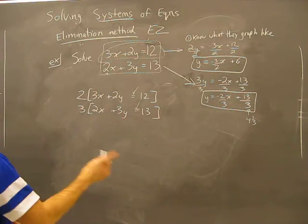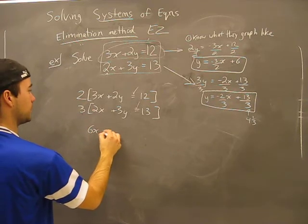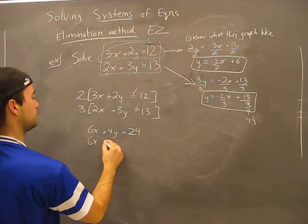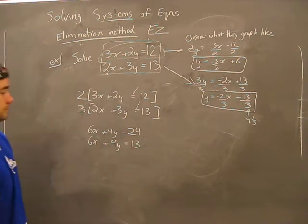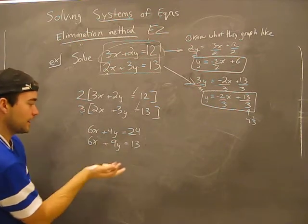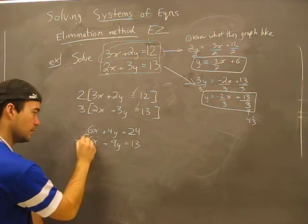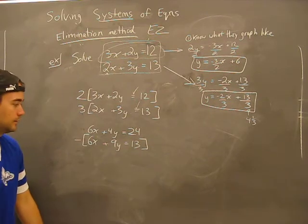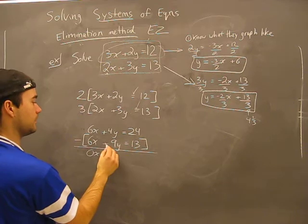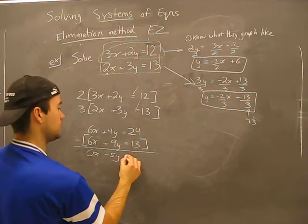All right, let's figure this out. The top row gives us six X plus four Y equals 24. The second row gives us six X plus nine Y equals 39. Now we have six X and six X — we can get rid of these. I'll subtract the second equation from the first. That gives us zero X, then four Y minus nine Y equals negative five Y, and 24 minus 39.